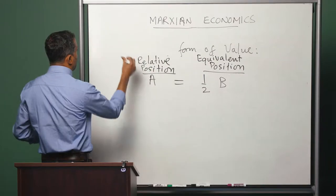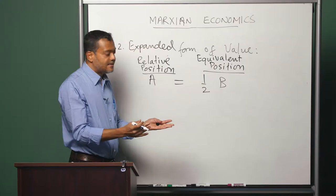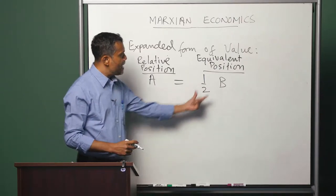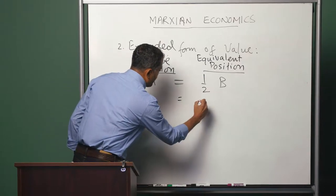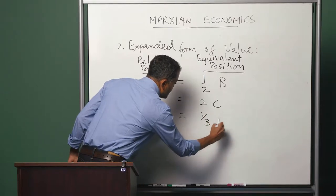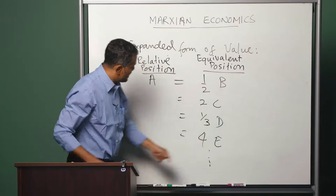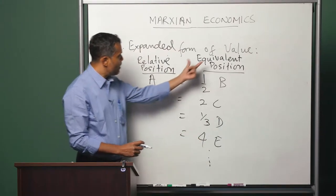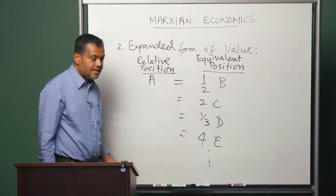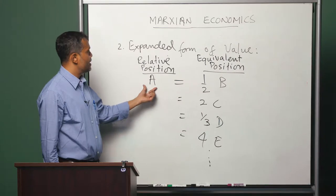The first step was the elementary form of value; the second step is the expanded form of value. In the expanded form of value, we consider the exchange between commodity A and B, commodity A and C, commodity A and D — that is, commodity A and all other possible commodities. So A exchanges for half units of B, 2 units of C, one-third units of D, 4 units of E, and so on. In this form of exchange, the relative position is occupied by A, and all these other commodities occupy the equivalent position. That means 2 units of C express the value contained in 1 unit of A, one-third units of D express the value contained in 1 unit of A, and so on.